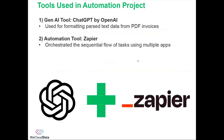The tools used in this project are ChatGPT by OpenAI, used for formatting the parsed text data from PDF invoices, and Zapier, which is used to orchestrate the sequential flow of tasks using multiple app connectors or plugins available from Zapier.